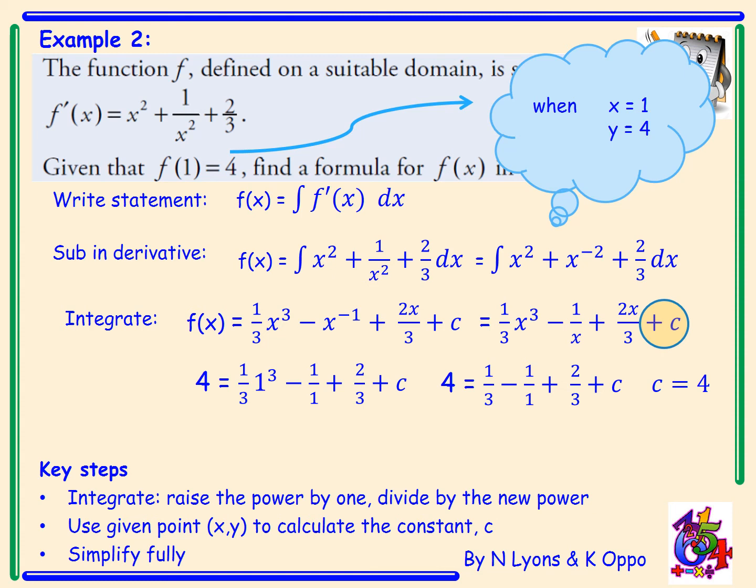Now to finish off, I have to simplify fully and write the function: f(x) equals a third x cubed minus 1 over x plus 2x over 3 plus 4.